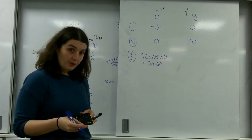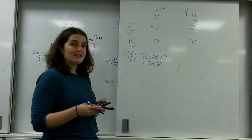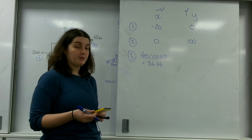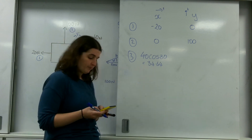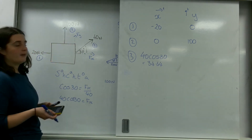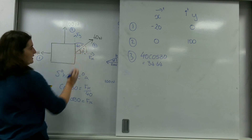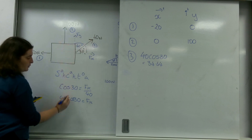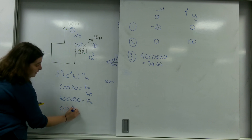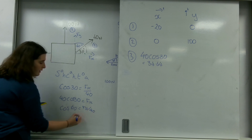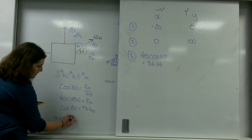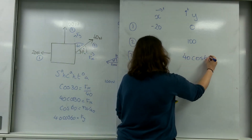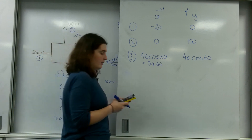Please remember: do not put things into surd form. My calculator gave 20 root 3, but you cannot put that in an A-level physics paper — you must use enough significant figures or decimal places. Now for Fy: using 60 degrees as the angle, cos 60 equals Fy over 40, so 40 cos 60 equals Fy, which is 20.